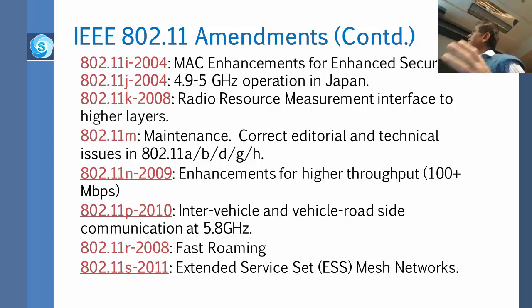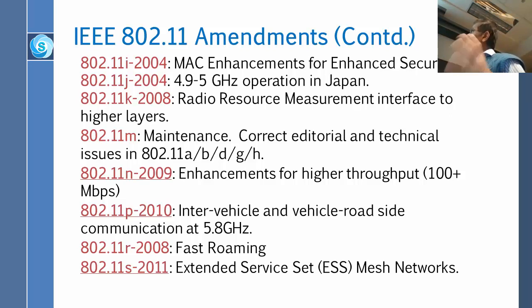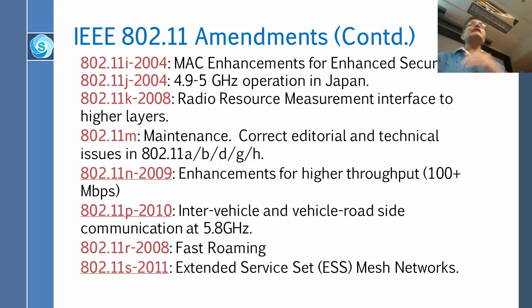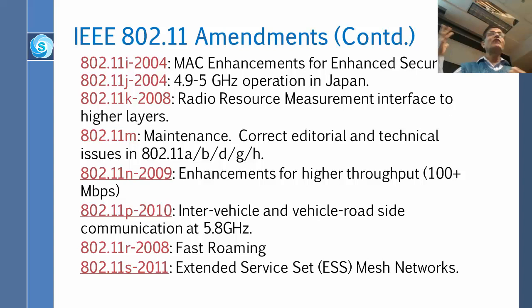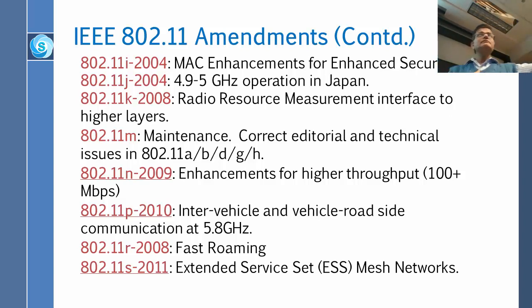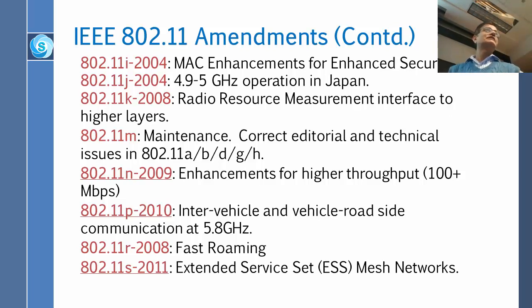J is for Japan, K is something else — maintenance, and so on. P is intervehicle and vehicle-roadside communications. This is what is coming; they call it VANET, Vehicle Area Networking. All the cars will have antennas, Wi-Fi, talking to other cars. That standard is P, and we have a whole separate module on that. R is fast roaming — going from one place to another, like in cell phones. S is extended service set mesh network, where your packet can go from here to there by stations. T is the performance matrix.